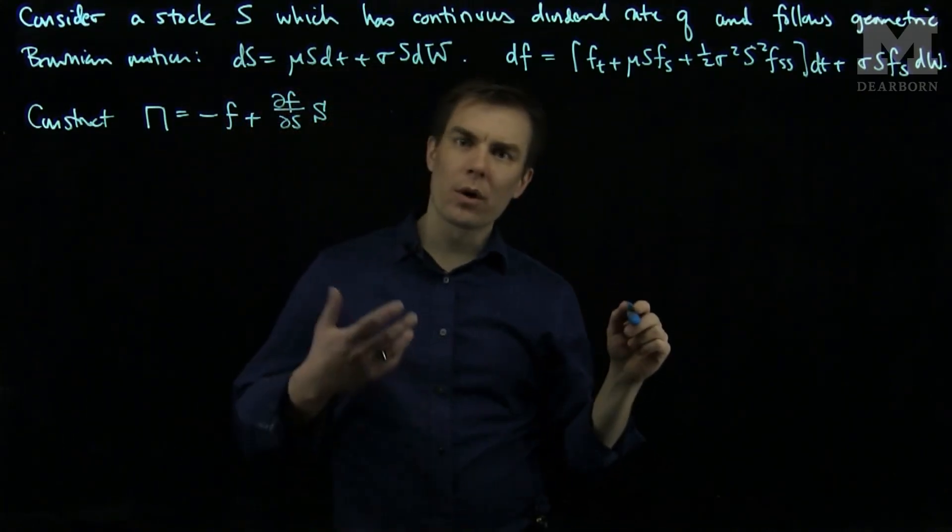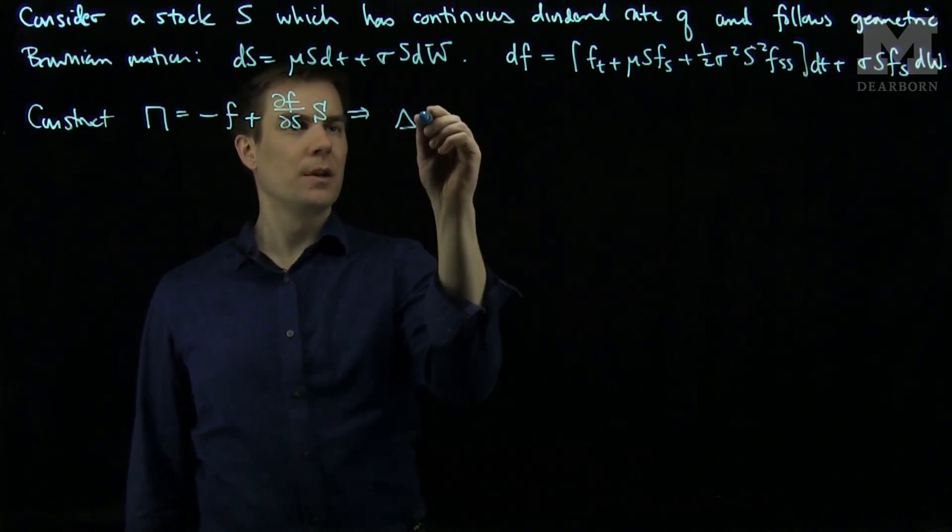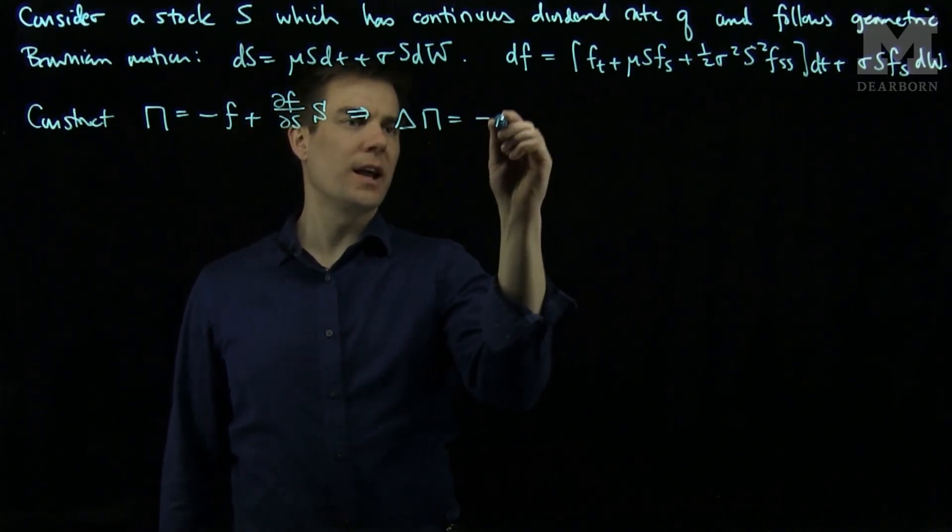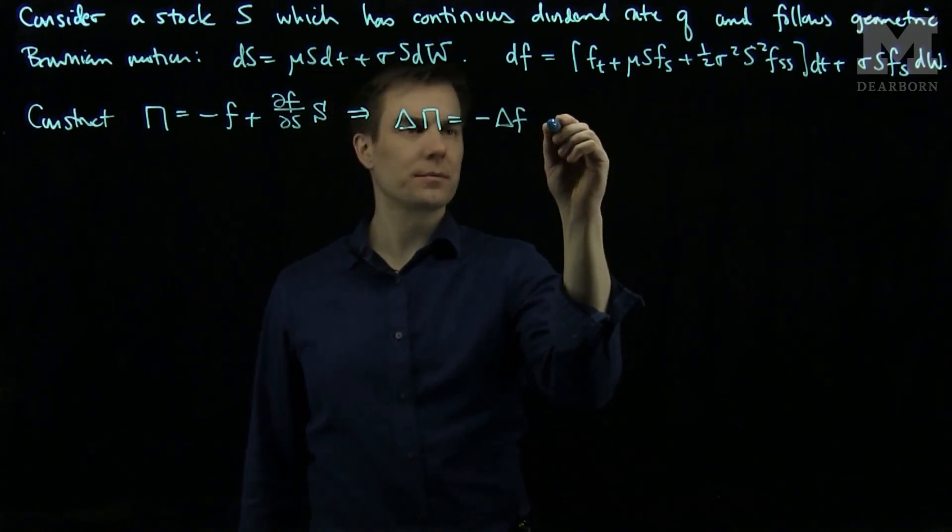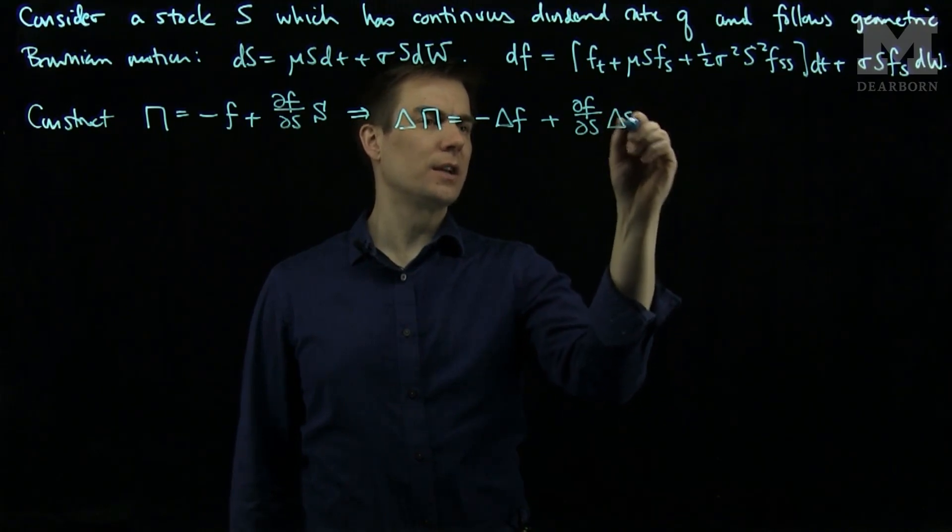And now we'll compute the differential of this portfolio over a short period of time. Delta pi will be negative delta F plus partial F partial S delta S.